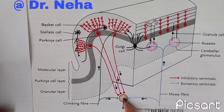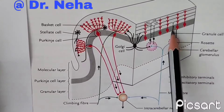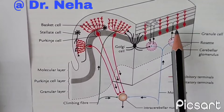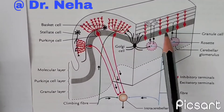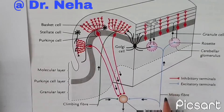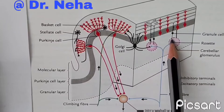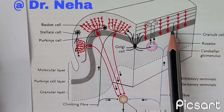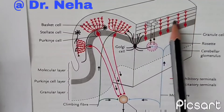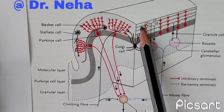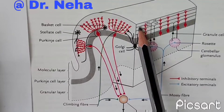Then we have the granular layer. The inner granular layer consists of numerous closely packed granule cells. This layer also contains the Golgi cells. Each granule cell gives rise to four or five short dendrites which make claw-like endings that synapse with the terminals of the mossy fibers. The axon of each granule cell passes to the molecular layer, where it bifurcates at a T-junction; its branches run parallel to the long axis of the cerebellar folium. These fibers are known as parallel fibers and they run at right angles to the dendritic processes of the Purkinje cells, making synaptic contacts with them.